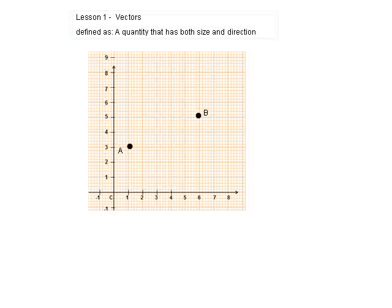Today we're going to be looking at vectors. Using this simple graph on this slide, we're defining the vector by showing two points A and B. The vector is defined as the translation of a point going from A to B. By definition, a vector has both a size and a direction. To specify a vector, we first identify its magnitude, represented by the length of the line from A to B, and its direction, shown by an arrow.